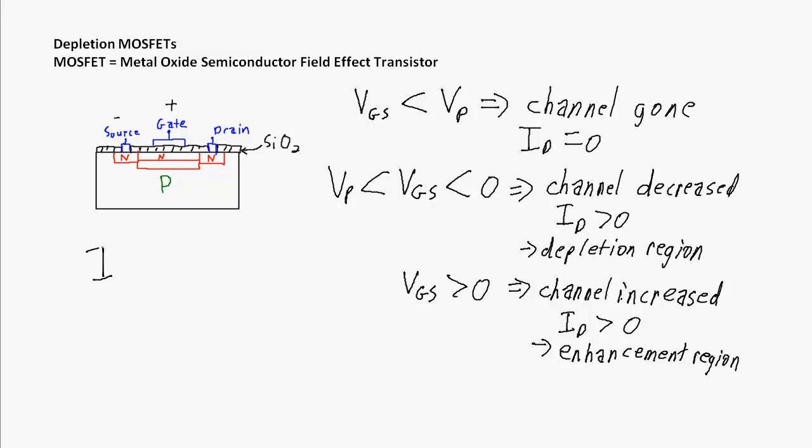The relationship between ID and VGS for a JFET was: ID equals IDSS times (1 minus VGS over VP) squared. IDSS is the drain-source current at saturation, and VP is the voltage where the channel gets closed. This applied to JFETs, and it also applies to depletion MOSFETs. The same equation applies, but the difference is that VGS here can now go positive.